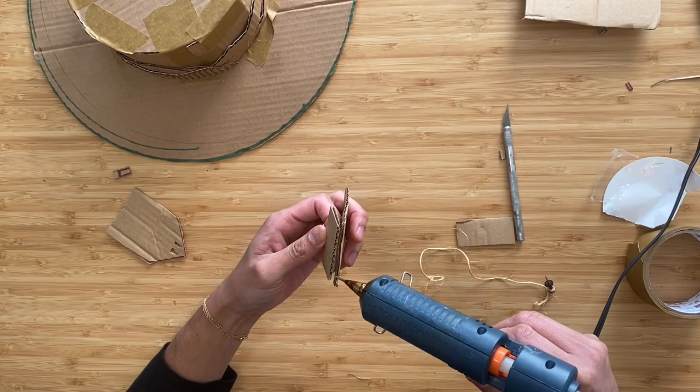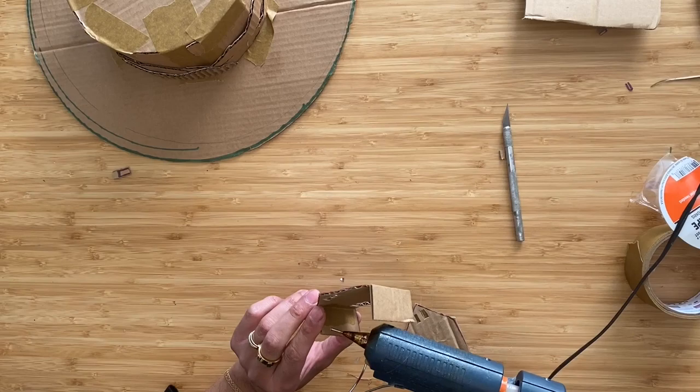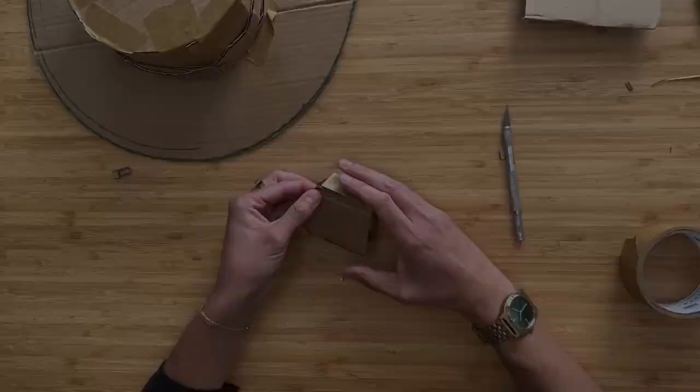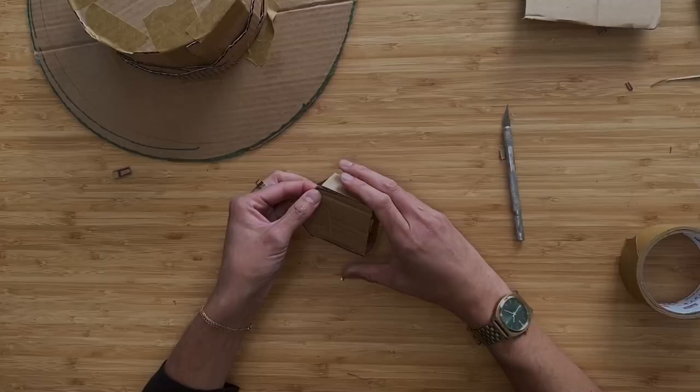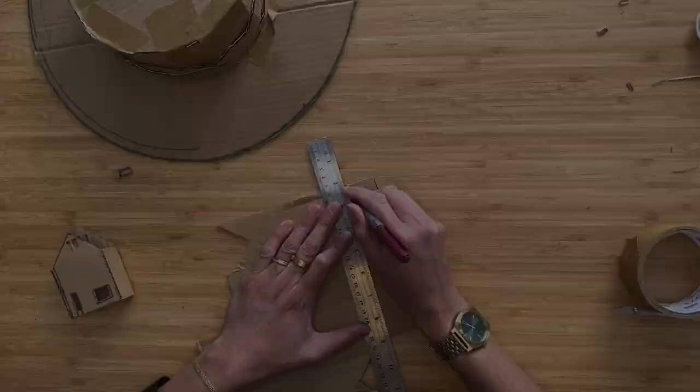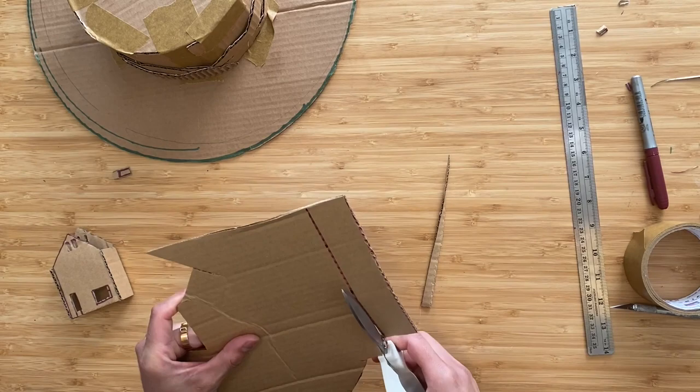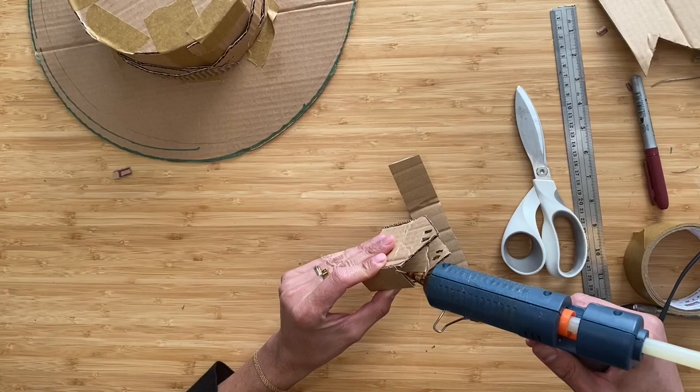I'm going to attach everything using these small rectangles that I cut out and hot gluing. Remember, you can also use tape. So these are the sides of the house. Now that the sides are attached, I'm going to measure out a strip of cardboard that's a little bit thicker than the width of the house and cut it out and then attach it as a roof.